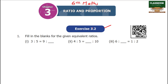Exercise 3.2. First, filling the blanks for the given equivalent ratios — that is Equivalent Ratios. Fill in the blanks. 5 is 5 into 3, what do you get? 15.